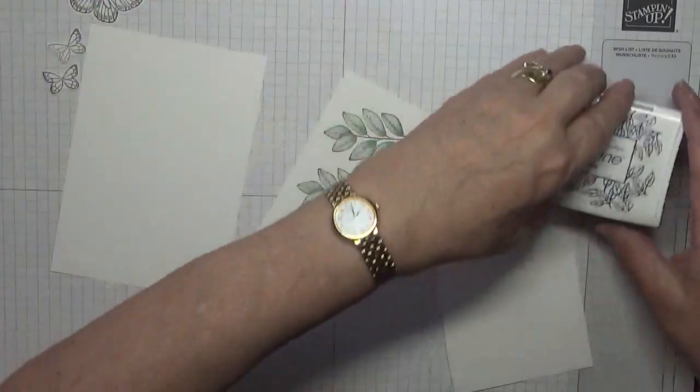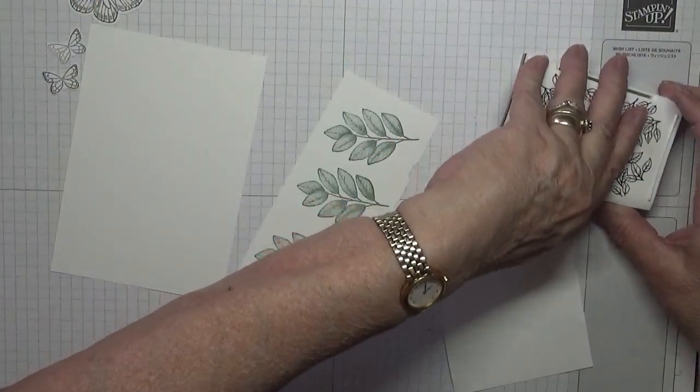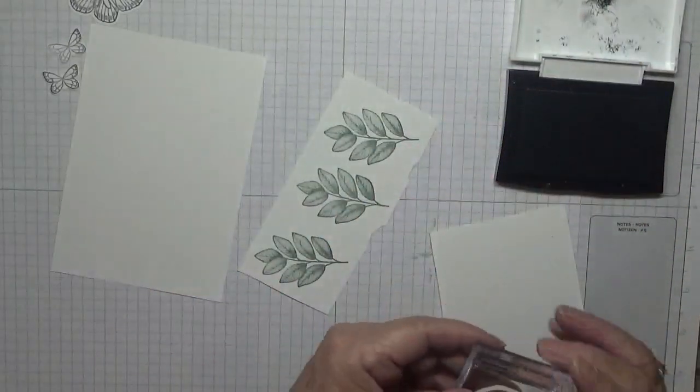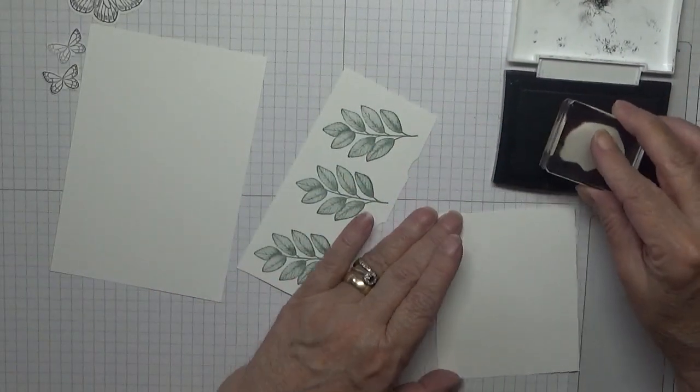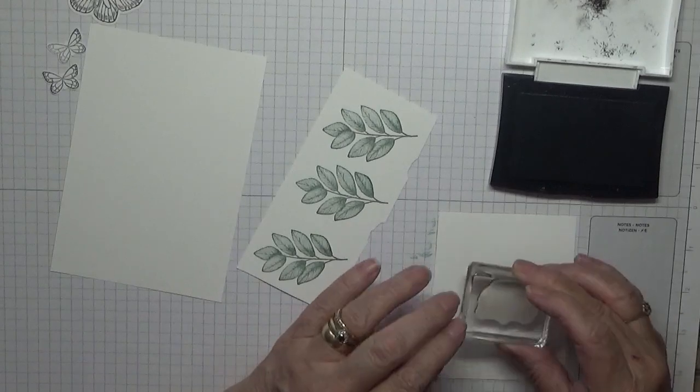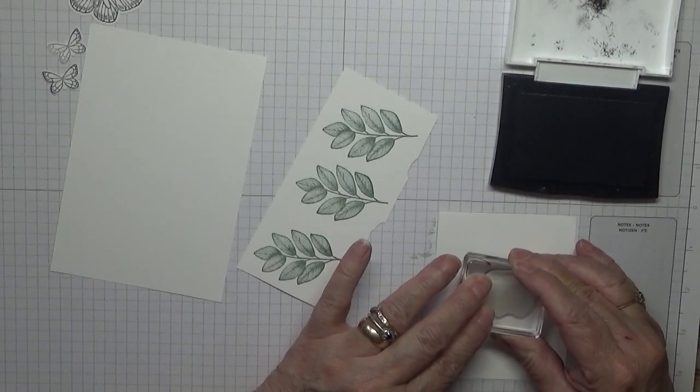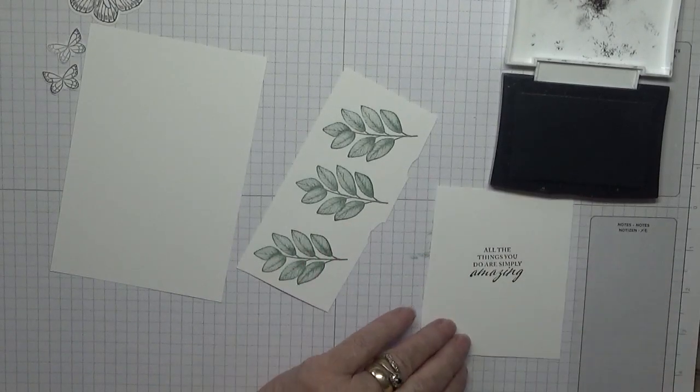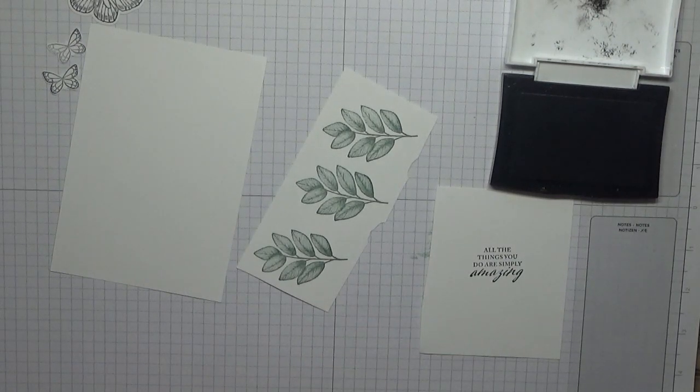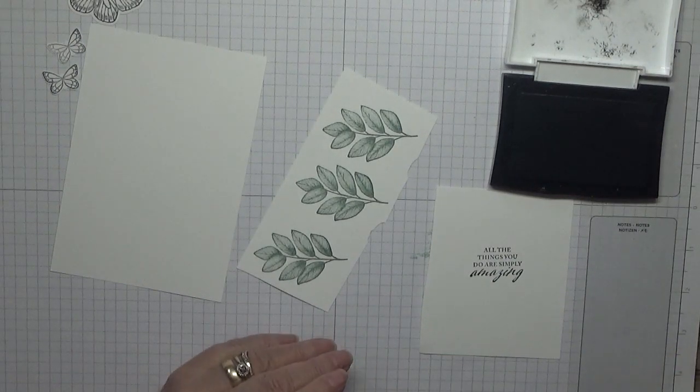The sentiment on this one, I've got my Versafine Onyx ink. I'm just going to stamp that in the middle. Put a lid on my glue where it dries up.